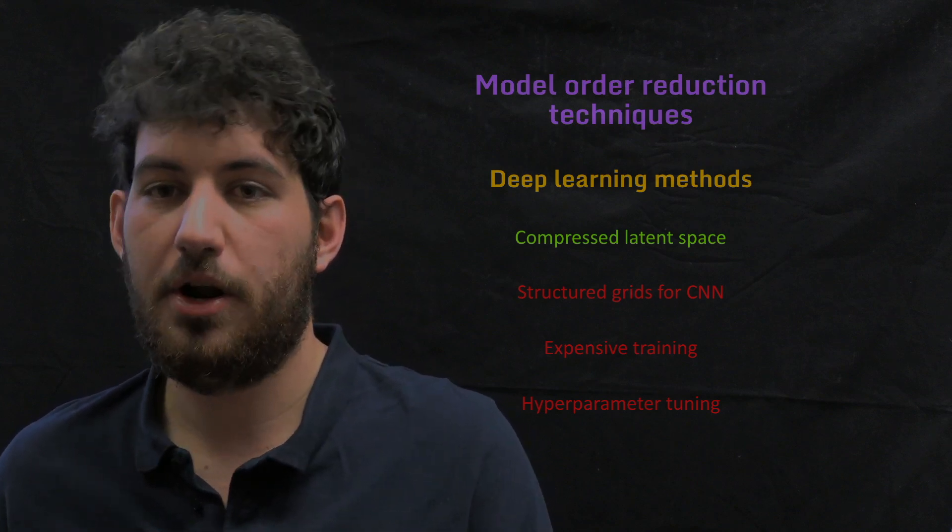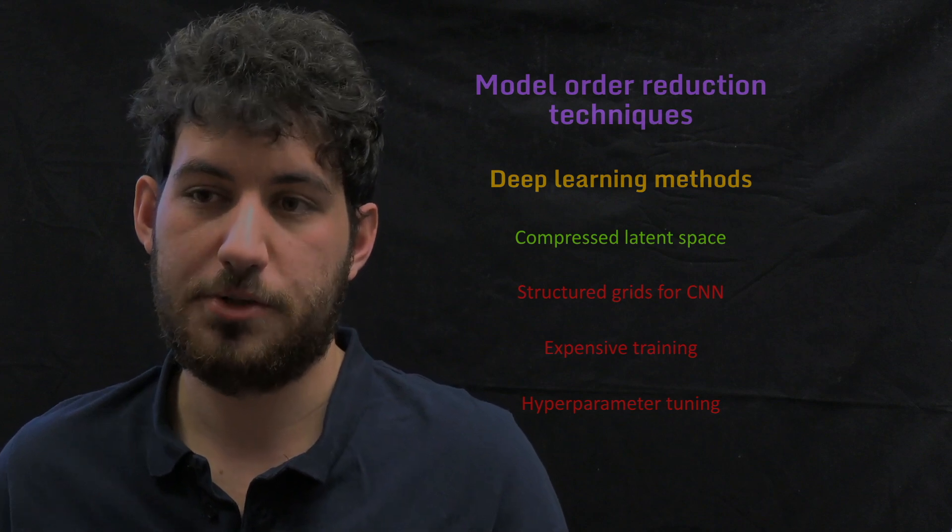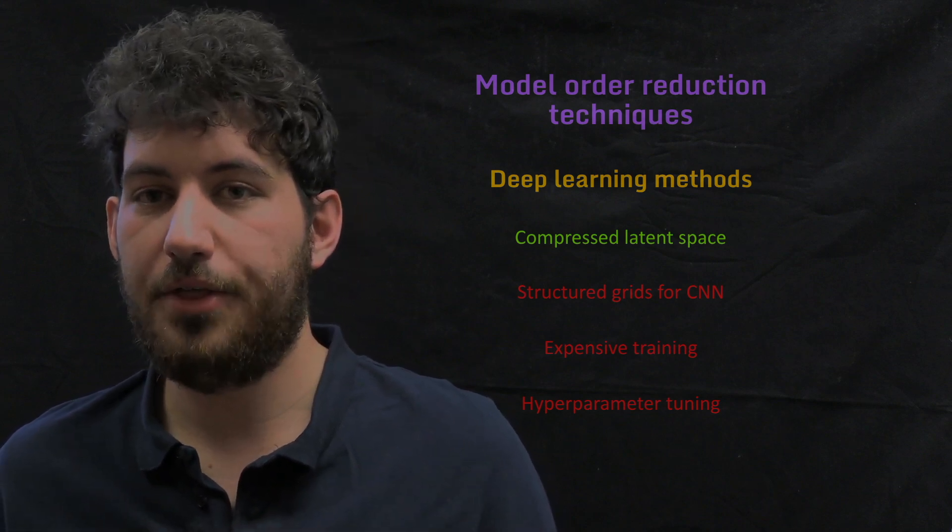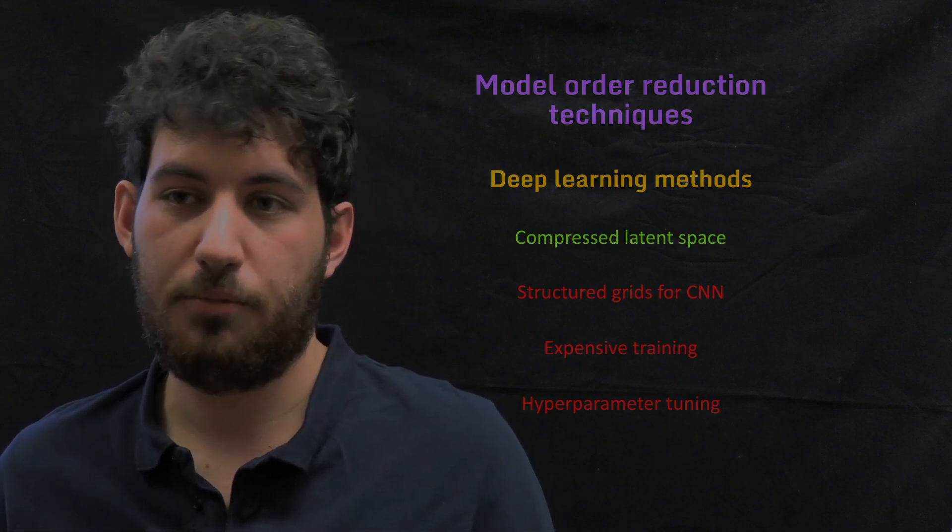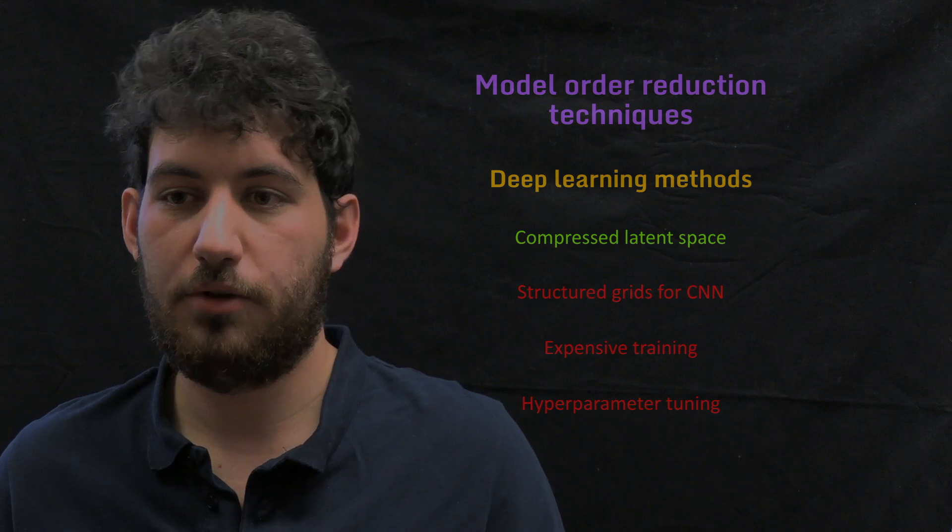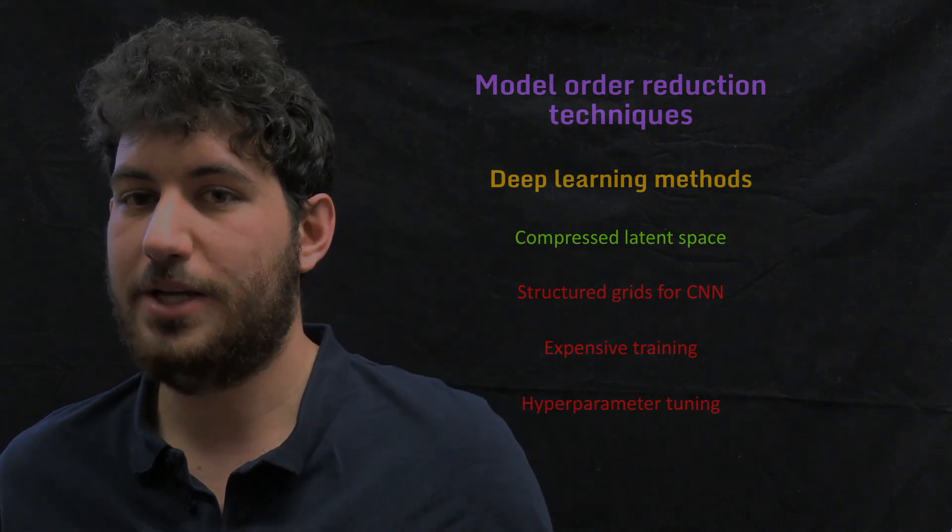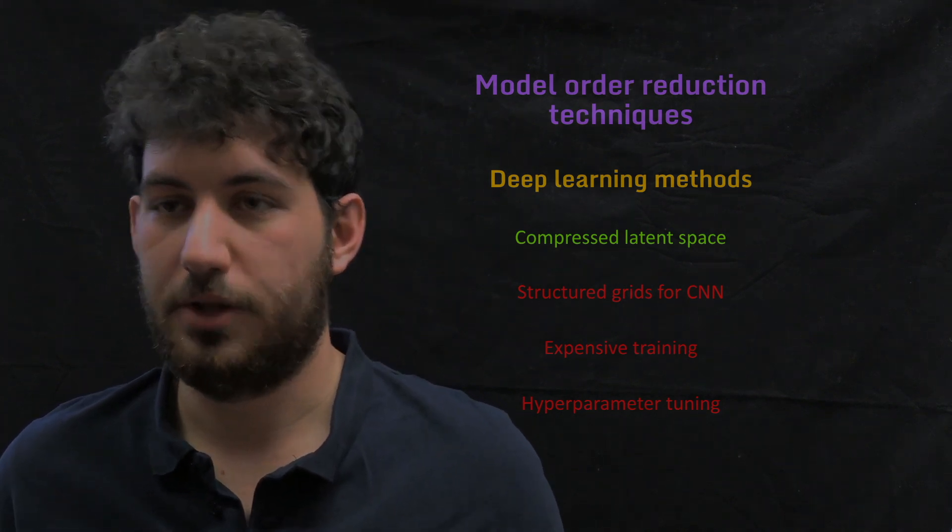Or we need to use graph neural networks, which are much more expensive to train. And both architectures actually need quite a lot of hyperparameter tuning to adapt between cases. So it's an extra cost that we need to consider when we do the training.